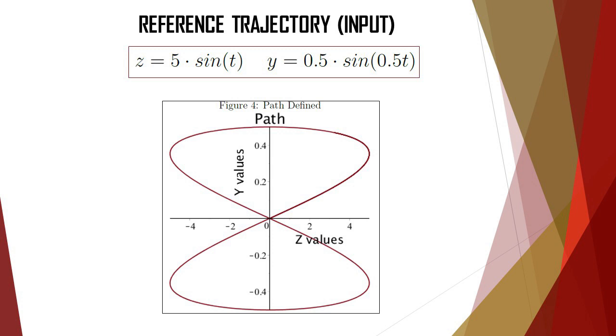For our path, we will be using a figure 8. The drone will be starting at 0, 0 and moving into figure 8 and coming back to 0, 0. We have t as about 10 to 20 seconds and we have our z function as 5 sine t and our y as 0.5 sine 0.5 t. Let's now get to the problem.